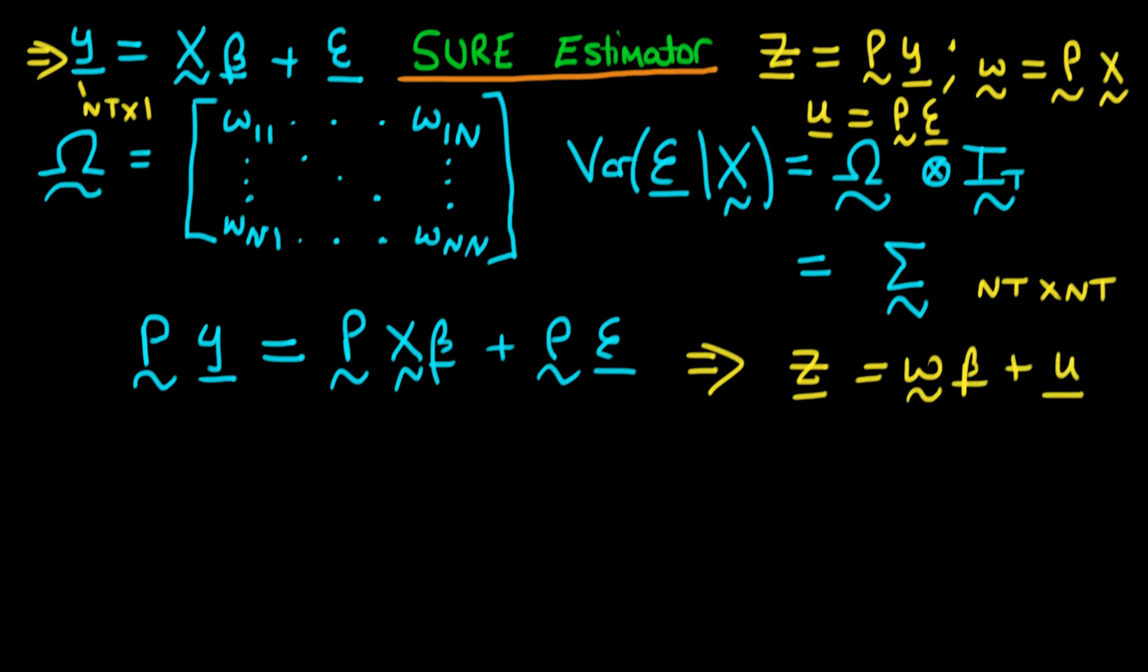So let's leave that behind for a second and let's just work ahead with what we had originally. We're going to come back to this in a second. So if we look at this transformed system, we can calculate the variance of the transformed error. The variance of the transformed error is essentially the variance of this matrix P, which we haven't defined yet, times the error epsilon, given that we have X.